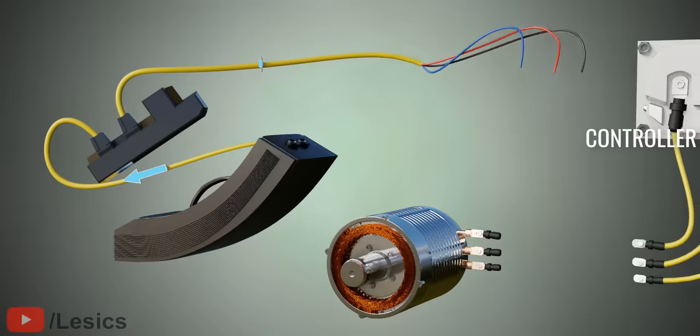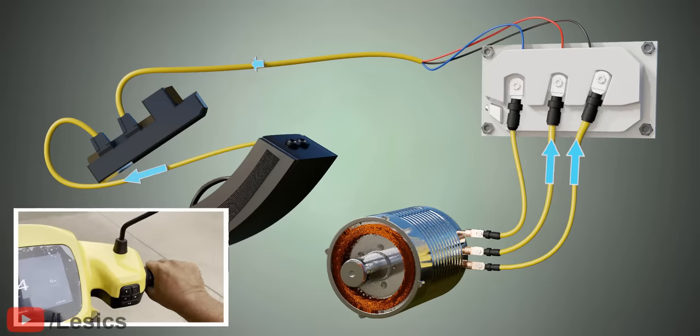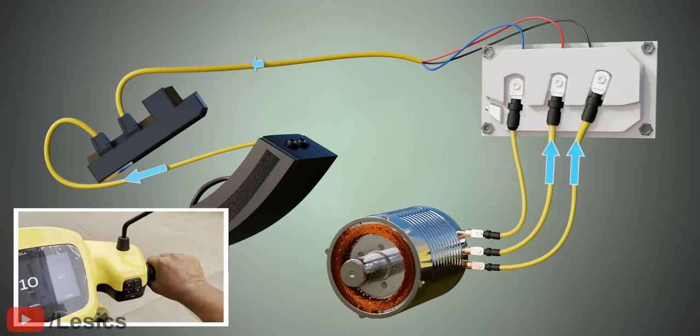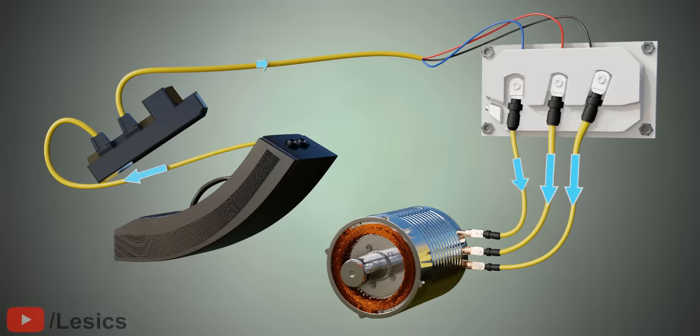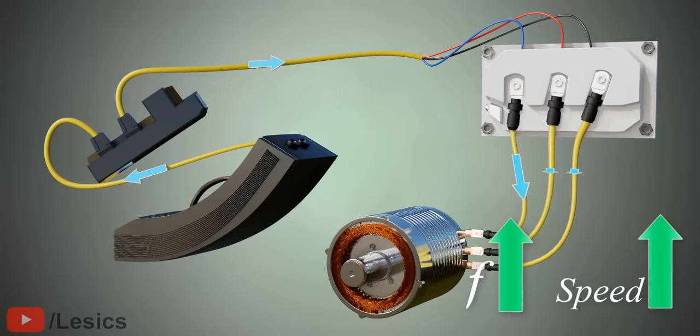A controller is also used in the scooter. Its main duty is to control the frequency of the alternating current. For example, when you accelerate, the controller gets this signal and commands the inverter to increase the AC current's frequency. The greater the frequency, the greater the IPM motor's speed.